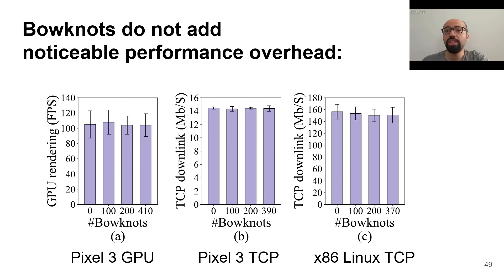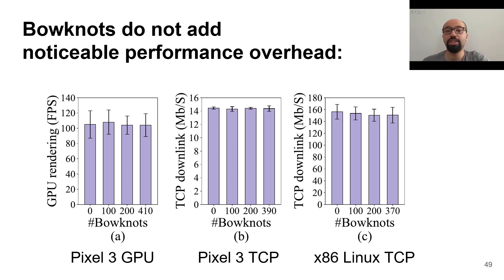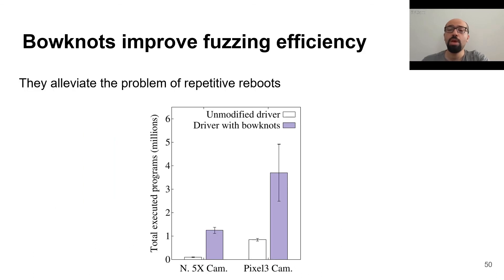Bonots are very lightweight and add negligible performance overhead. Especially in practice, we only need to instrument one or two buggy functions with bonots. However, to measure the overhead, we instrumented several hundreds of system functions with bonots and executed them — even in this case, the performance overhead is still not noticeable. Bonots also eased the problem of repetitive reboots during fuzzing. As a result, in a bonot-instrumented driver, the fuzzer executed far more programs than the baseline, resulting in better code coverage and finding bugs faster.